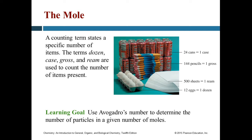A lot of textbooks — and ours is no exception — use as the analogy terms like a dozen, a case, a gross, or a ream. A dozen is 12. A case traditionally meant 24 cans or bottles. A gross is 144. A ream is a package of 500 sheets. These are all examples of words that take a large number and make them into a smaller one — so instead of saying 'I have 240 eggs,' you can instead say 'I have 20 dozen.'